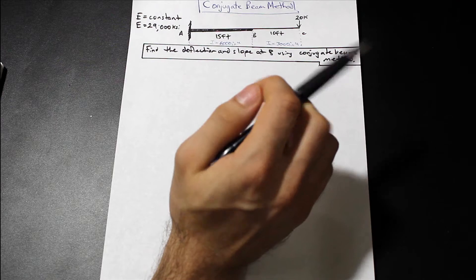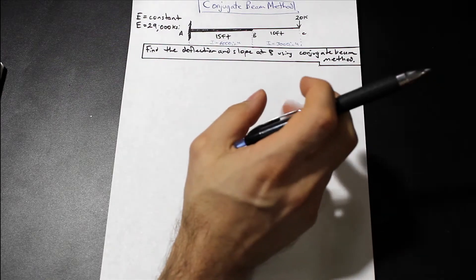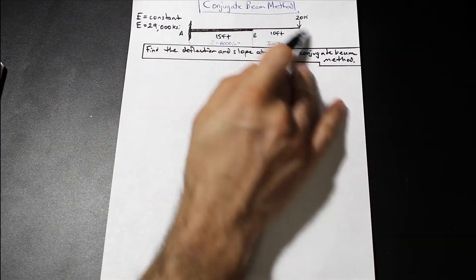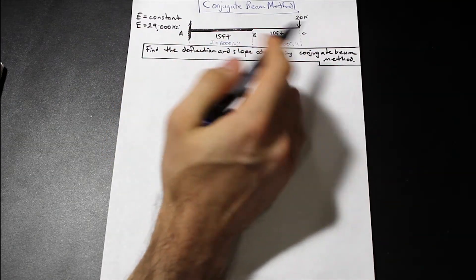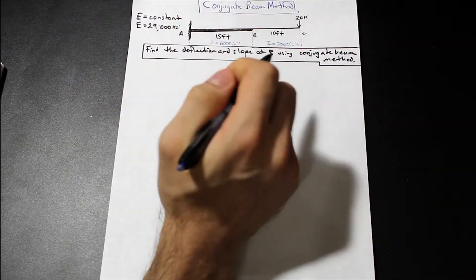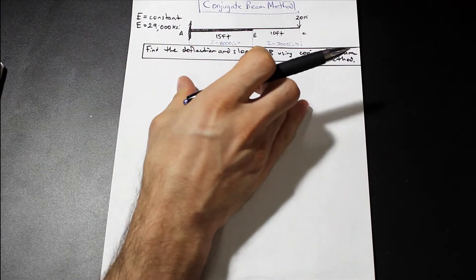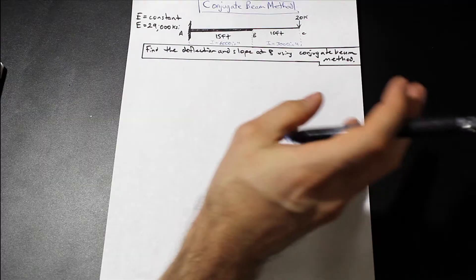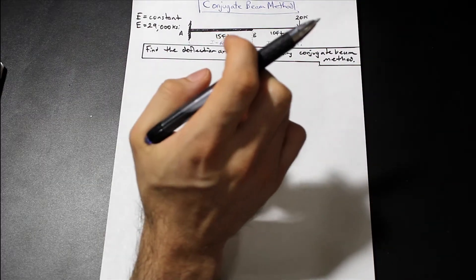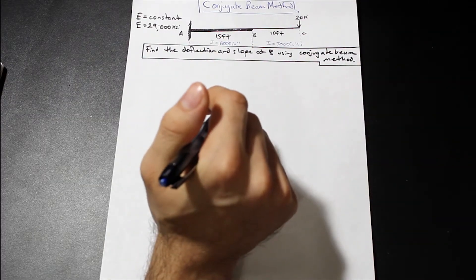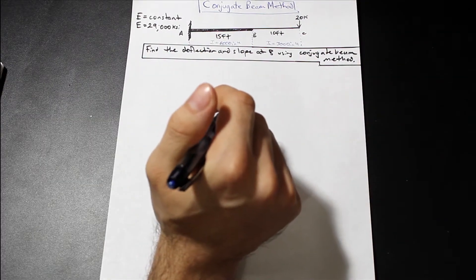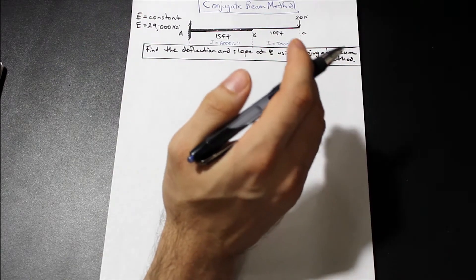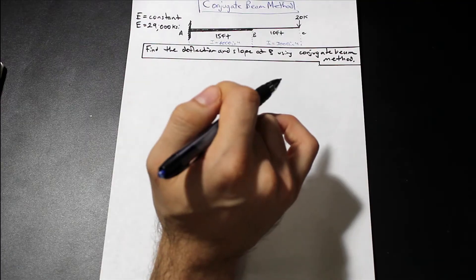So what is the conjugate beam method? The conjugate beam method is essentially where we solve for the moment diagram of the real beam, divide it by EI, then take that load and put it onto what's called the conjugate beam. From that we can solve for the deflection and the slope. Remember this is also for determinate structures — this is not an indeterminate problem.